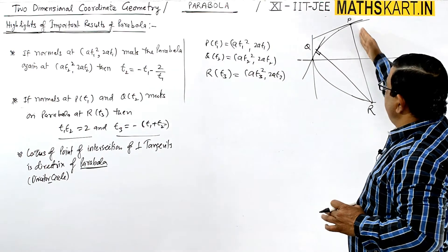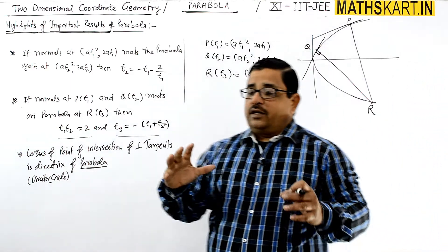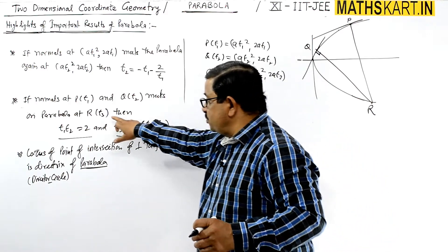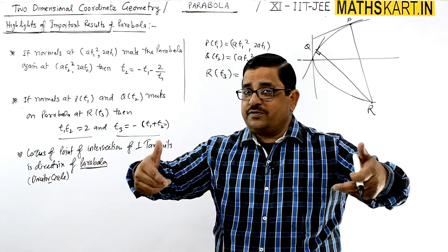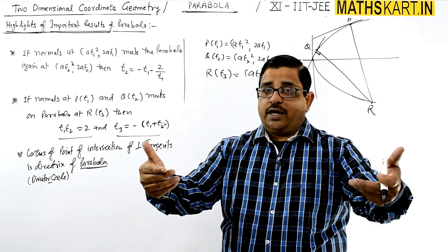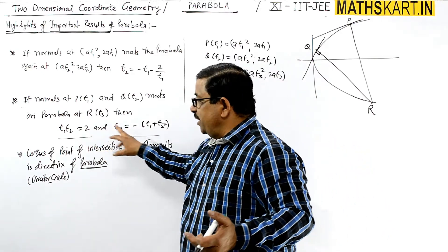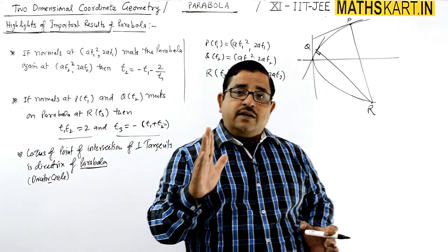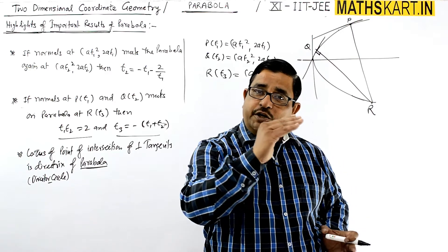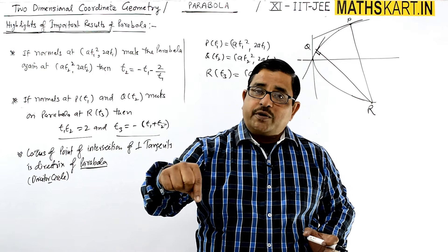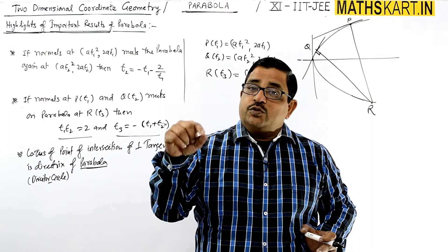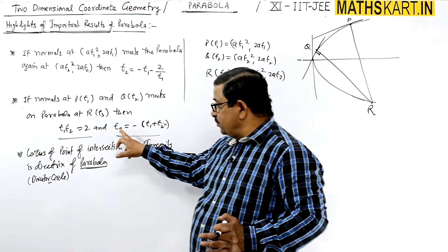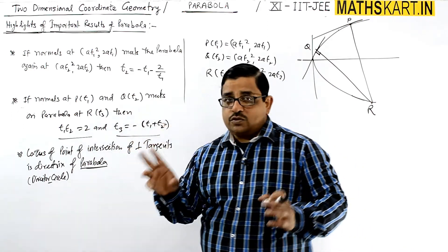The intersection point is satisfied by coordinates (at3², 2at3). So two conditions arise: the relation between t1, t2, and t3 is first that t1·t2 = 2, and second that t3 = −(t1 + t2). These are the two results for when normals at t1 and t2 on the parabola meet at the third point t3 on the parabola.